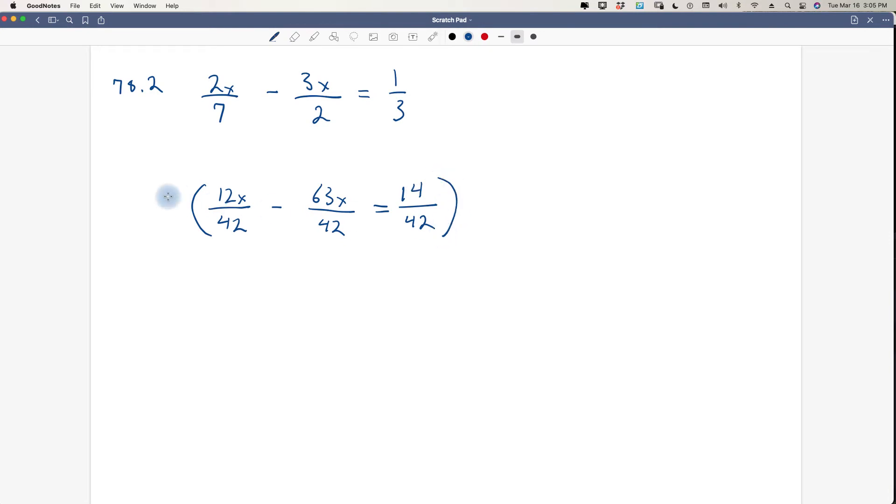We're going to do the same thing we did before. We're going to multiply each term by 42 over 1, and that's going to make the 42 on the bottom cancel out. So it becomes 12x minus 63x equals 14. Quick and easy. We already have all of our x's on the same side. So 63, positive 12, and a negative 63 is going to be a negative 51x, and that equals 14. So all we have to do now is divide both sides by negative 51.